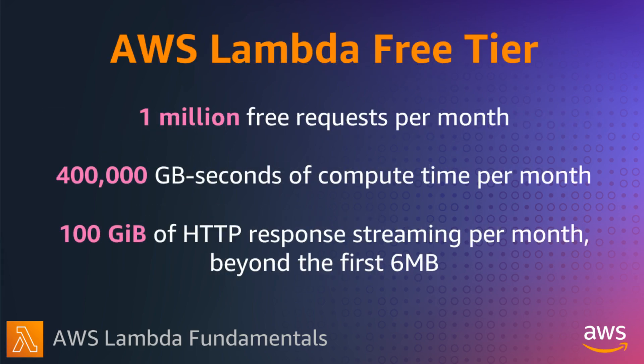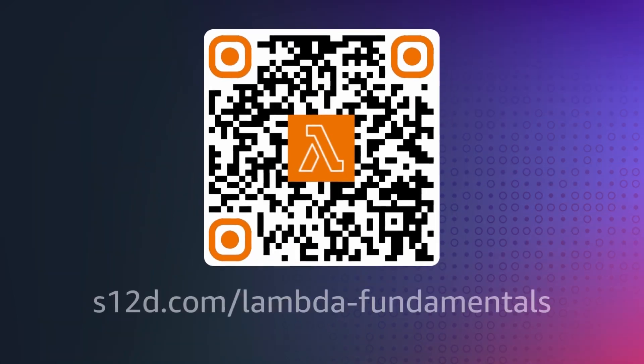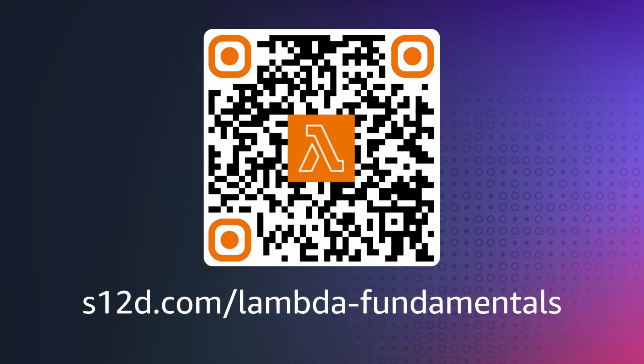The AWS Lambda free tier includes 1 million free requests per month, 400,000 gigabit seconds of compute time per month, and 100 GB of HTTP response streaming data per month when you exceed the first 6 MB.